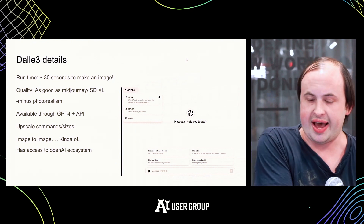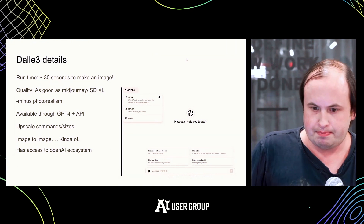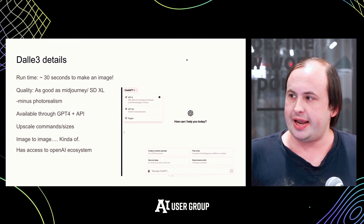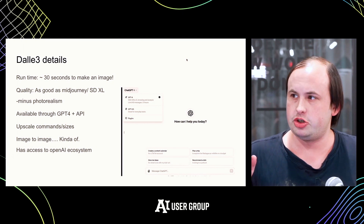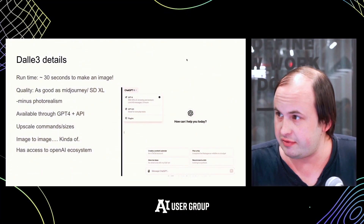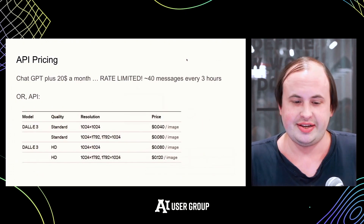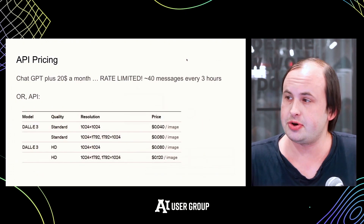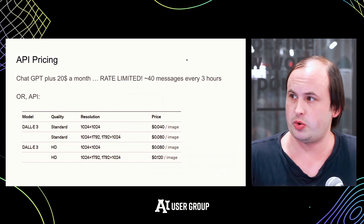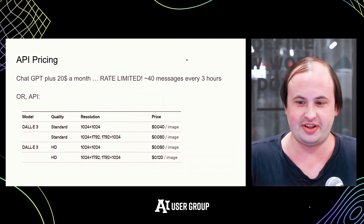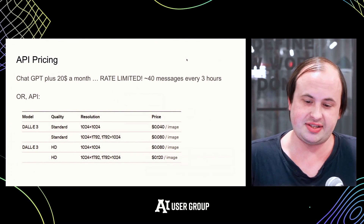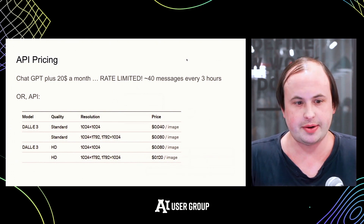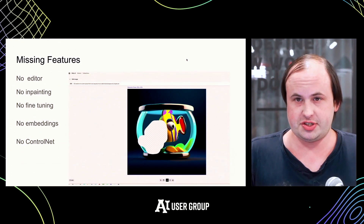It's effectively just a chatbot, so it doesn't have a lot of the other features you might expect from open-source tools and frameworks. It's also a bit expensive — you can only access it with a ChatGPT Plus membership at $20 a month, and you're limited to 40 images every three hours, or it's about 10 cents an image, which I think is on the high side.